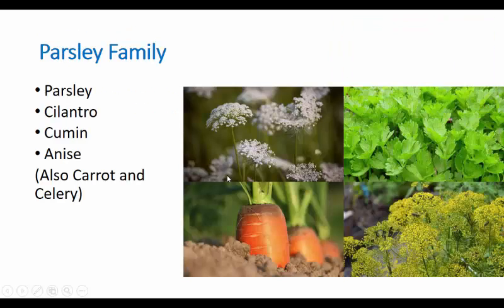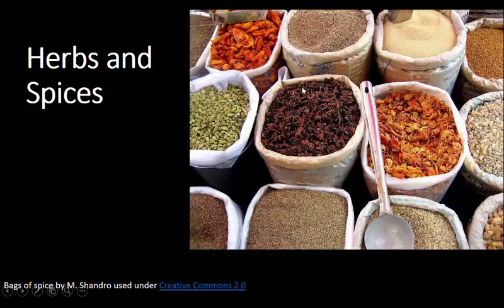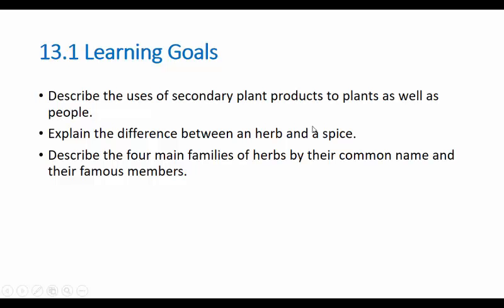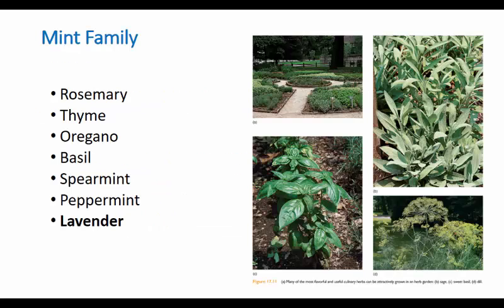Now let's move on to the parsley family. Your herbs here are parsley and cilantro. You also have cumin and anise. Star anise is where you get a lot of your licorice flavors from — it's used in a common Turkish and Persian liquor, which is related to what we changed into Jägermeister. It's also the natural source of licorice flavor in candies, though we probably use an artificial chemical for candy now.